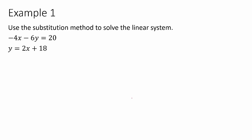In example one, we're given a system of two equations and we want to use the substitution method. We need to know what either x or y equals. In this case, that information is already given to us — y equals 2x plus 18. That means I can take the y in the other equation and substitute in 2x plus 18. So I write down the first equation, and where y appears I put parentheses and write 2x plus 18, which equals 20.